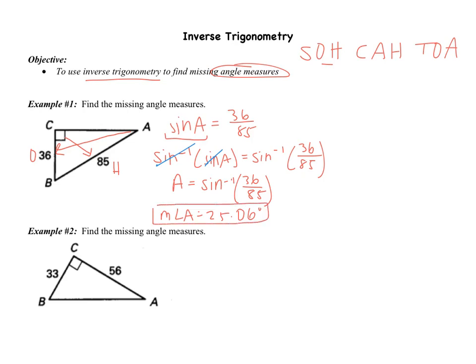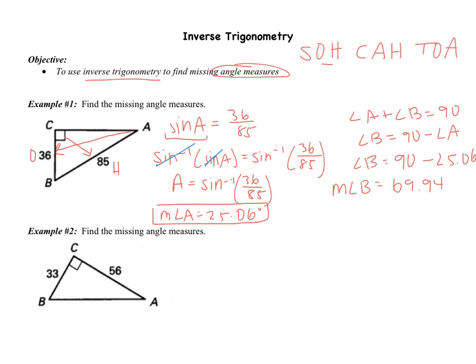Now we also have to find the measure of angle B. To find the measure of angle B, I could do the same thing — I could set up a trig ratio. Or, even easier than that, I know that if angle C is 90, angle A plus angle B has to also equal 90, because a triangle is 180. So that tells me that angle B is going to be 90 minus whatever angle A is. So angle B is 90 minus 25.06, and I get the measure of angle B to be 64.94 degrees.